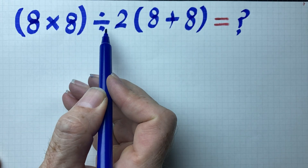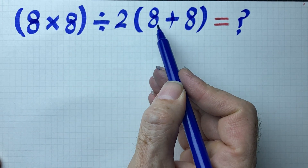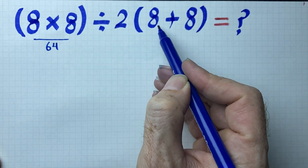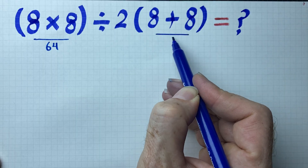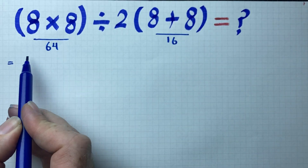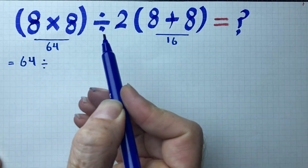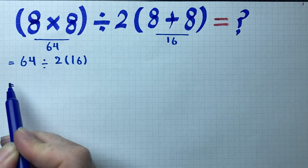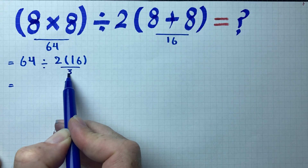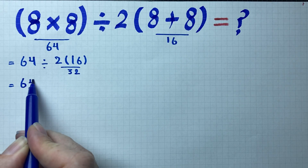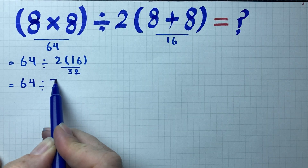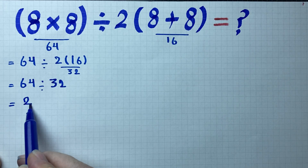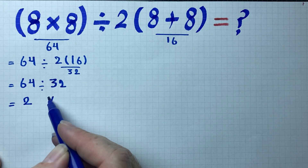We are going to find the value of 8 times 8 divided by 2 times 8 plus 8. Now, 8 times 8 is 64 and 8 plus 8 is 16, so it can be written as 64 divided by 2 times 16. Next, 2 times 16 is 32, so it becomes 64 divided by 32. As you know, 64 divided by 32 is 2 — but if your answer is 2, you are wrong.